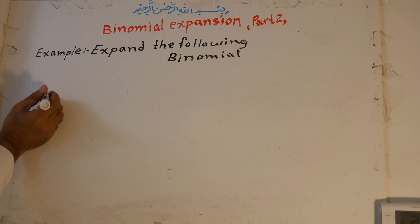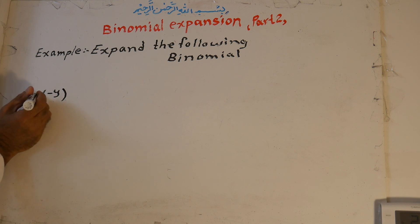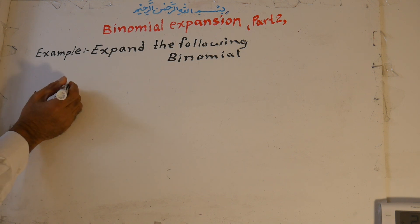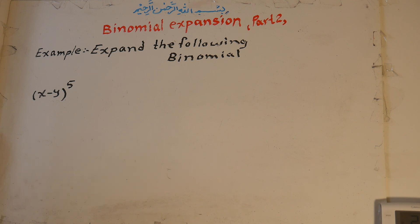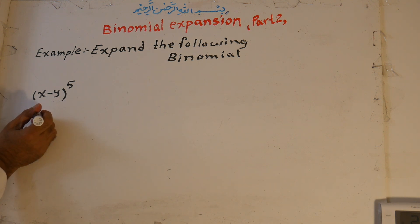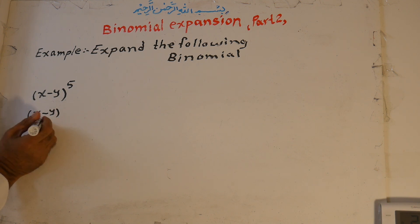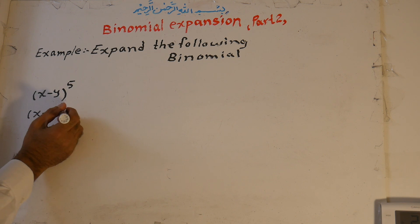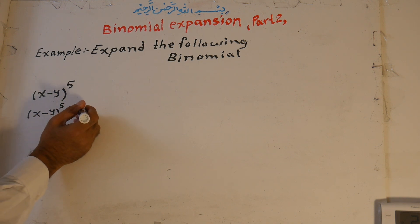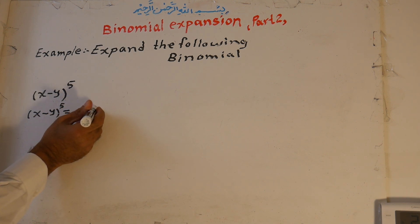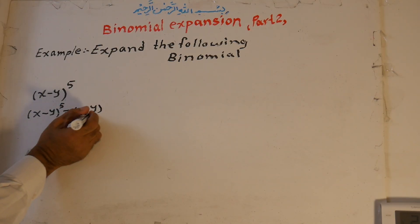Expand the following binomial: x minus y to the power of five. From our previous lesson, we know that x minus y to the power of five is equal to x minus y, multiplied by itself five times.